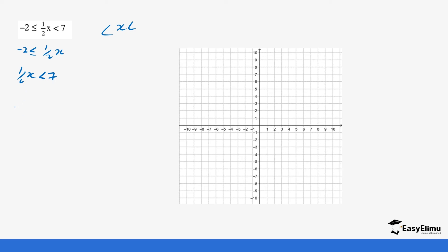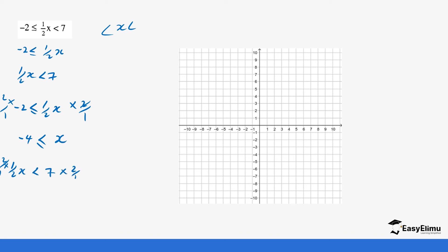For the first inequality: negative two is less than or equal to one-half x. We multiply both sides by two over one. Since we did not multiply by a negative, we do not change the sign, giving us negative four is less than or equal to x. For the second inequality: one-half x is less than seven. Multiply both sides by two, giving x is less than fourteen.